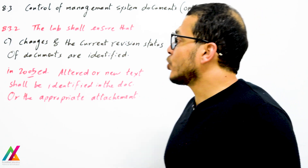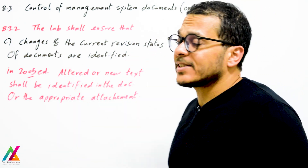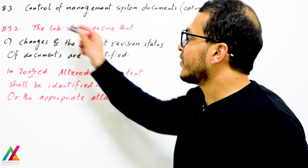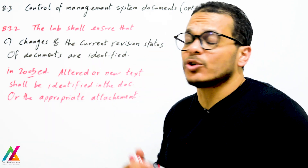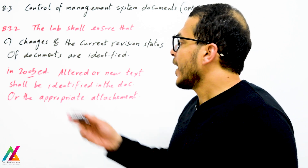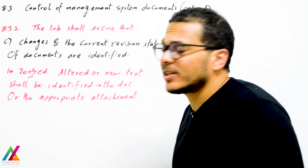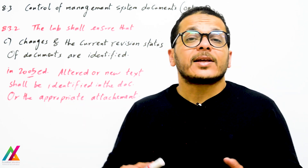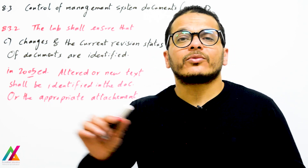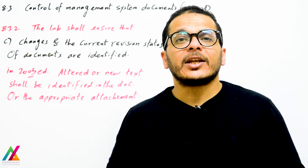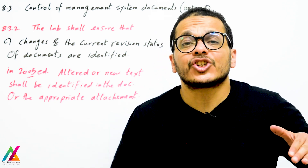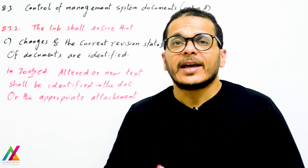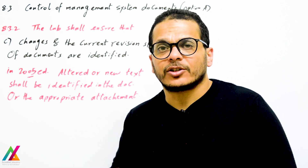The lab shall ensure that changes and the current revision status of documents are identified. In the 2005 edition, altered or new text shall be identified in the document or an appropriate attachment. For example, when modifying a procedure, you identify at the beginning what modification was made and in which line, then issue a new version. This requirement is the same in both editions.